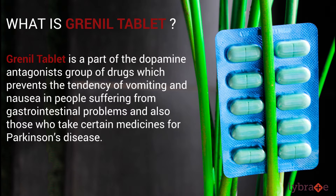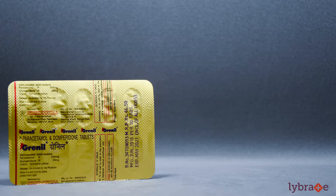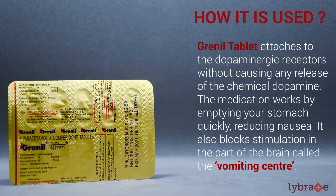Granium Tablet is part of the dopamine antagonist group of drugs, which prevents the tendency of vomiting and nausea in people suffering from gastrointestinal problems, and also those who take certain medicines for Parkinson's disease. It attaches to the dopaminergic receptors without causing any release of the chemical dopamine. The medication works by emptying your stomach quickly, reducing nausea, and also blocks stimulation in the part of the brain called the vomiting center.